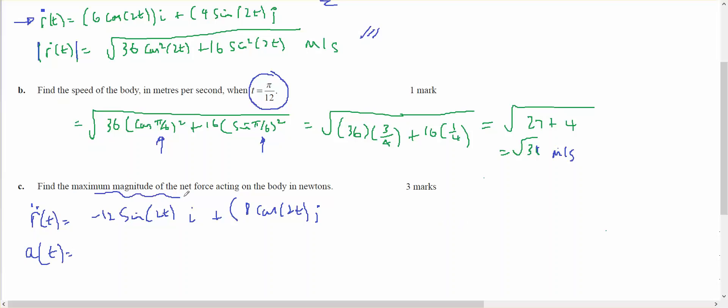The maximum magnitude of the net force, the force will be mass times acceleration, which means it's 3 times acceleration. So the force will be 3 times this, so minus 36 sine of 2t in the i plus 24 cos of 2t in the j.